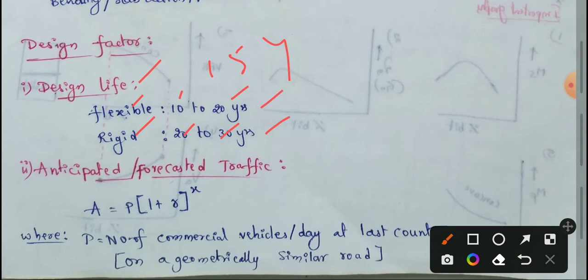Next factor: what is anticipated or forecasted traffic? Similar to population forecasting in environmental engineering, the same concept applies here — population growth equals traffic growth. This is forecasted traffic, and I will show you the formula.